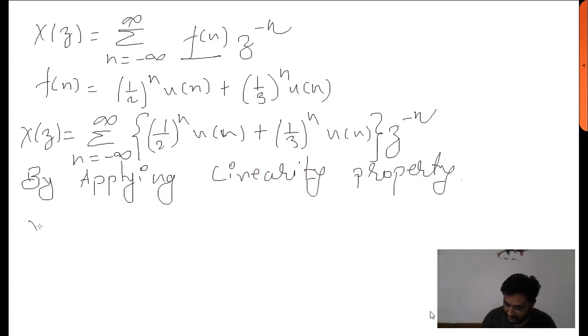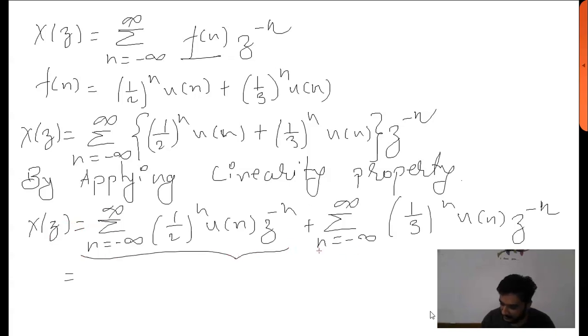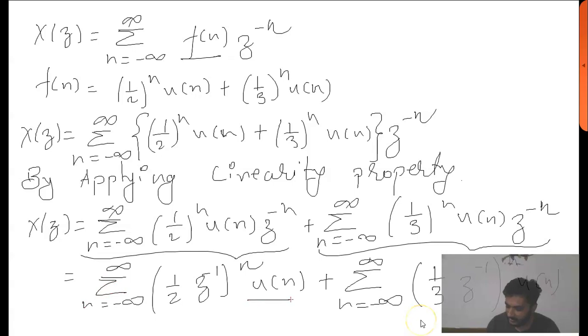By applying the linearity property, we get X(Z) equal to these terms, which can be rewritten. As this is u(n), it will always start with 0 and go to infinity, so the terms from minus infinity to minus 1 will become 0.